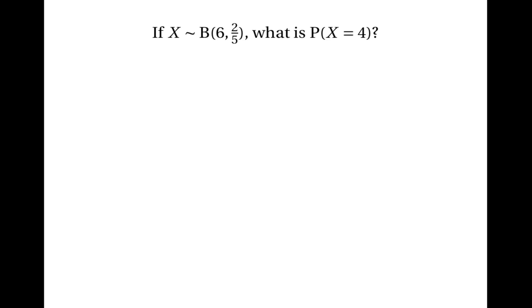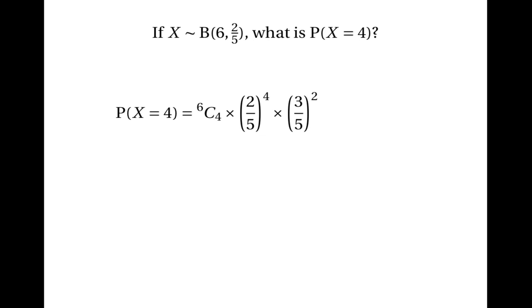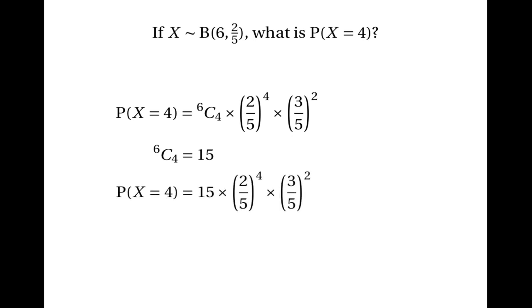Let's look at some examples. Suppose x is the number of successes in 6 trials where the probability of success is two fifths. What's the probability of 4 successes out of 6? The probability is 6 choose 4 times two fifths to the power of 4 times three fifths squared. We know that 6 choose 4 is 15, so the probability is 15 times two fifths to the power of 4 times three fifths squared, which equals 0.138 to three significant figures.